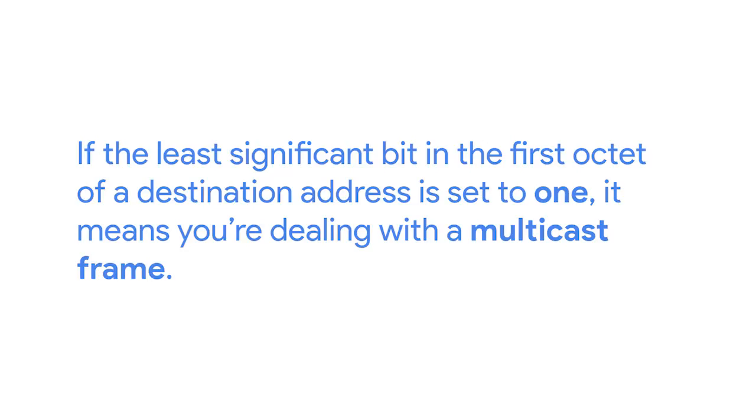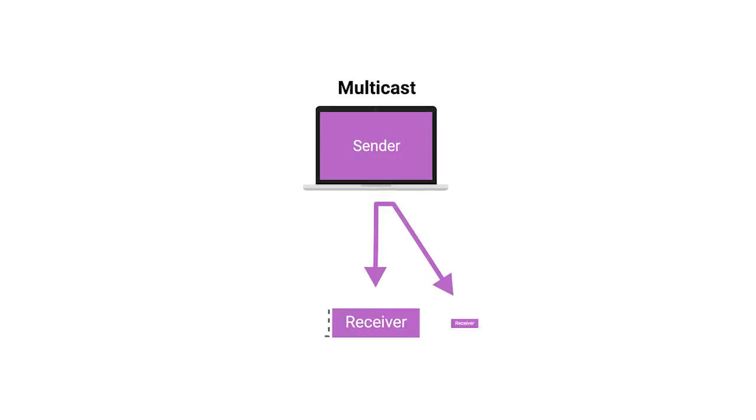This means it would be sent to all devices on the collision domain, but only actually received and processed by the intended destination. If the least significant bit in the first octet of a destination address is set to one, it means you're dealing with a multicast frame. A multicast frame is similarly sent to all devices on the local network segment. What's different is that it will be accepted or discarded by each device, depending on criteria aside from their own hardware MAC address. Network interfaces can be configured to accept lists of configured multicast addresses for these sorts of communications.